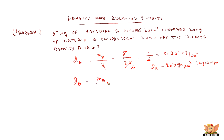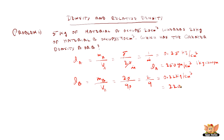Now we find the density of B, which is mass of B divided by volume. It is 20 kg divided by 90 cm cube, giving 2/9 = 0.22 kg per cm cube. Converting to grams per cm cube, this becomes 220 grams per cm cube. From the values of DA and DB, DA is greater than DB since 250 is greater than 220.